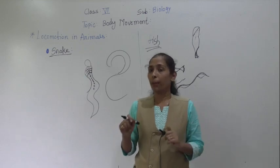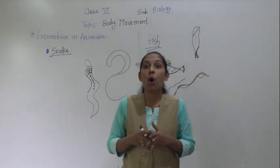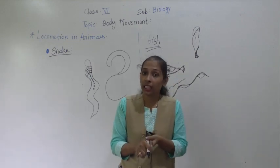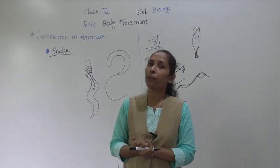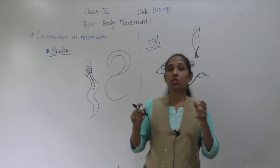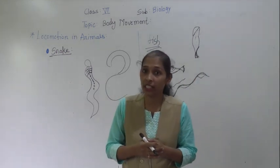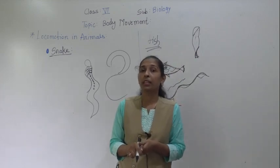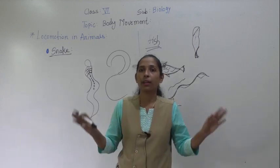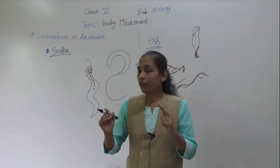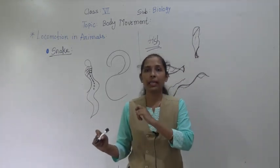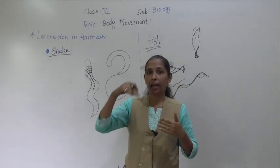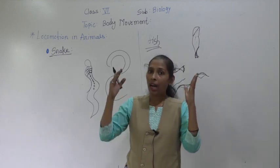Birds have hollow bones. Because of these hollow bones, the weight of the body becomes very light, and due to this light body weight, they can easily fly in the air. Next, birds have strong chest muscles. These powerful chest muscles help them to flap their wings during flight. Birds also have a streamlined body shape, which helps to cut through the air current at high altitudes where air speed is very high.